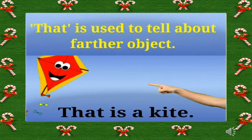Here you can see 'that', T-H-A-T. 'That' is used to tell about a farther object. When the object is far away — see here, you can see the kite, it is too far away from this hand. It is in the sky, and we are pointing over there and saying 'that is a kite.' So when the object is far away, you have to use 'that', T-H-A-T.